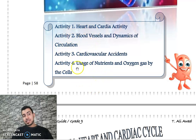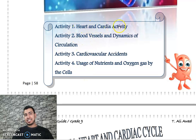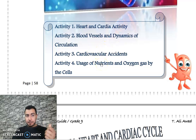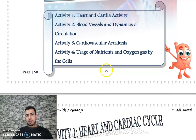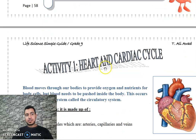The last activity is very very important. Now for activity one, heart and cardiac activity, we are going to see new words. They might seem a little difficult so we need to practice them to memorize them. Activity one: heart and cardiac cycle.